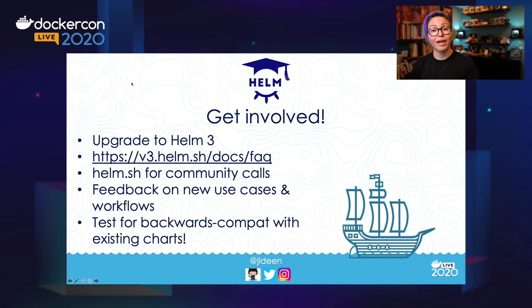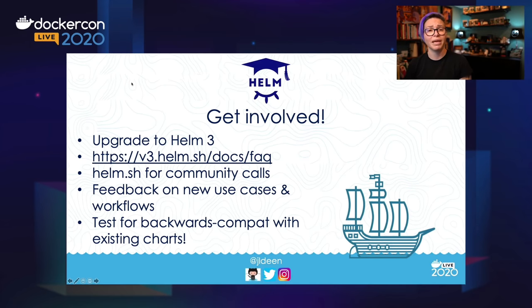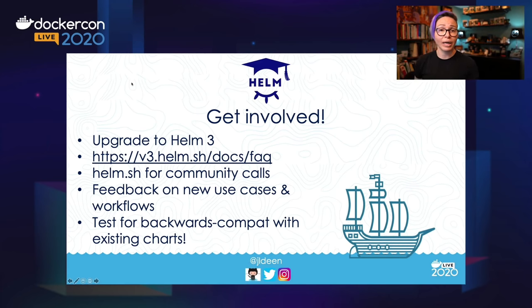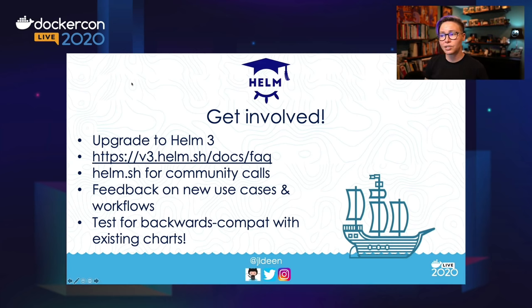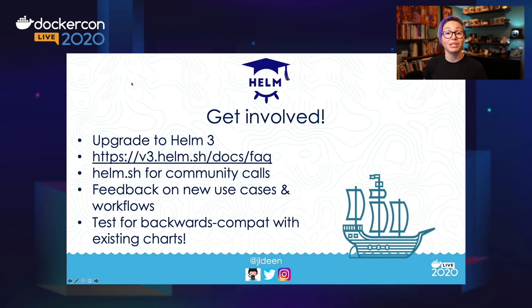Now that we've kind of walked through all of that, you're probably wondering what's next. We've gotten to go hands-on with Helm 3, learned how to install it, run our normal commands, and handle release migration from 2 to 3. The next step is to upgrade to Helm 3. Go get involved with our community — we would love to have you be a part of it and hear from you. You can check out `v3.helm.sh/docs/faq` and also `helm.sh` for our community calls. We would love feedback on new use cases and workflows we previously haven't considered. We also need people to continue testing for backwards compatibility with existing charts — if something breaks, let us know.